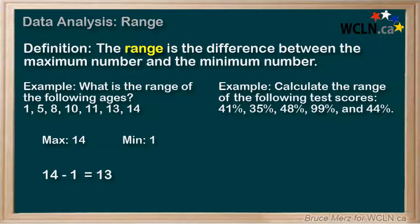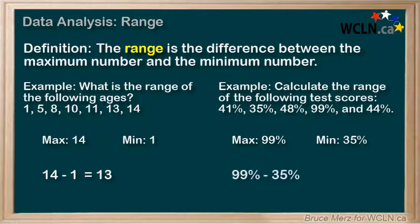So the range is the max minus the min, which means 99% minus 35%, which equals 64%. And there you go. Our range, or our spread of the percentages here, is 64%. Done.